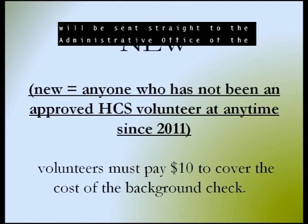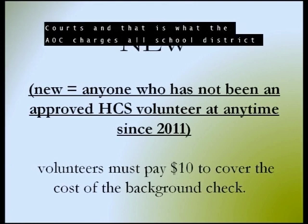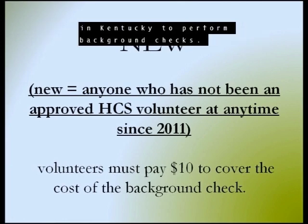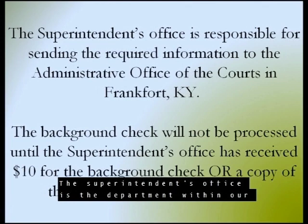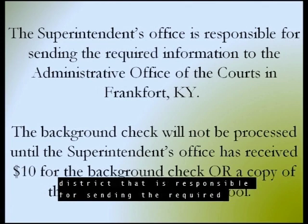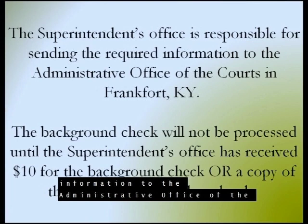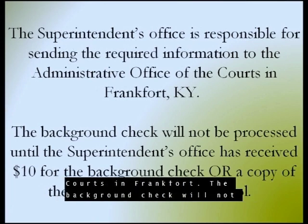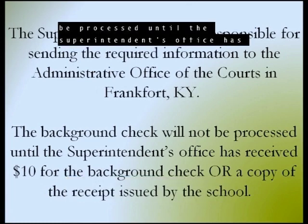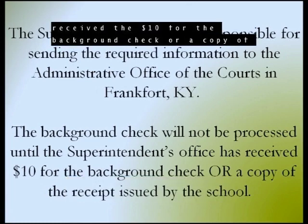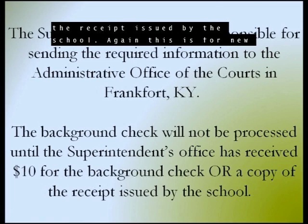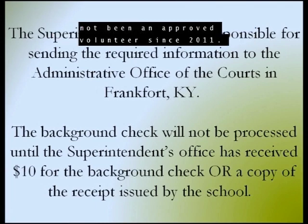That $10 will be sent straight to the Administrative Office of the Courts, which is what the AOC charges all school districts in Kentucky to perform background checks. The Superintendent's Office is the department responsible for sending the required information to the Administrative Office of the Courts in Frankfort. The background check will not be processed until the Superintendent's Office has received the $10 or a copy of the receipt issued by the school. This is for new volunteers only.